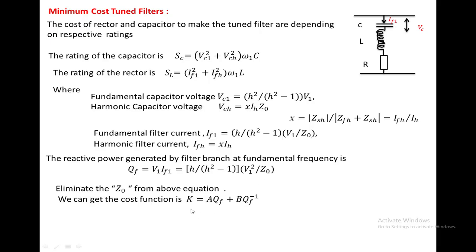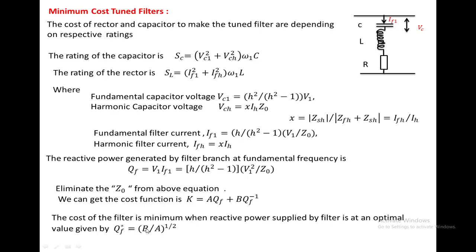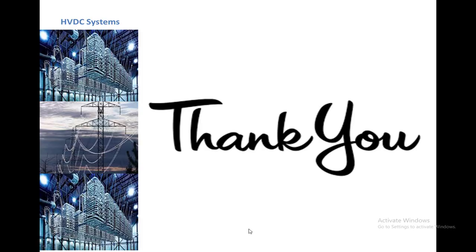Substituting the above equations, we obtain a cost function K = A·QF + B·QF^(−1), where QF is the reactive power generated by the tuned filter. Differentiating with respect to QF and equating to zero gives the minimum cost of the tuned filter as B/A raised to the power of one-half. Thank you very much for watching this video.